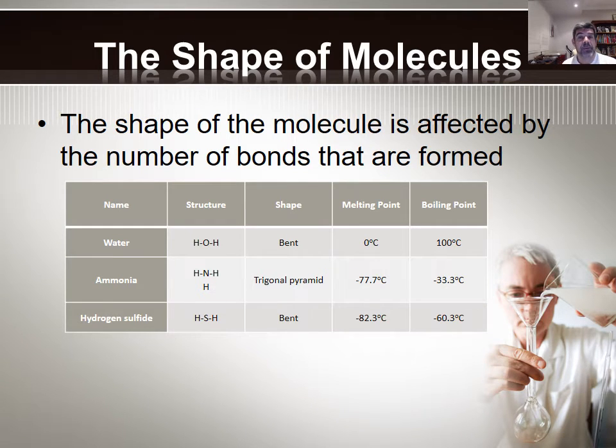The shape of the molecule is affected by the number of bonds that are formed. And that means that we can start to classify different types of compounds on the basis of this shape. So the first of these is the water molecule. And that's the one that we're most familiar with. And it's the one that's really set the context for this particular type of discussion.